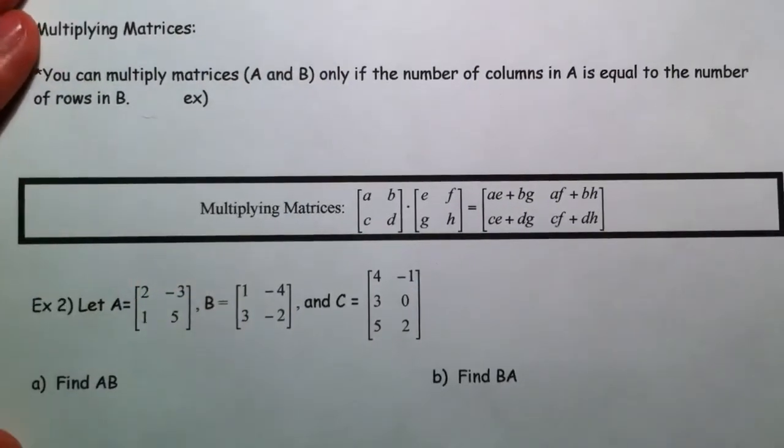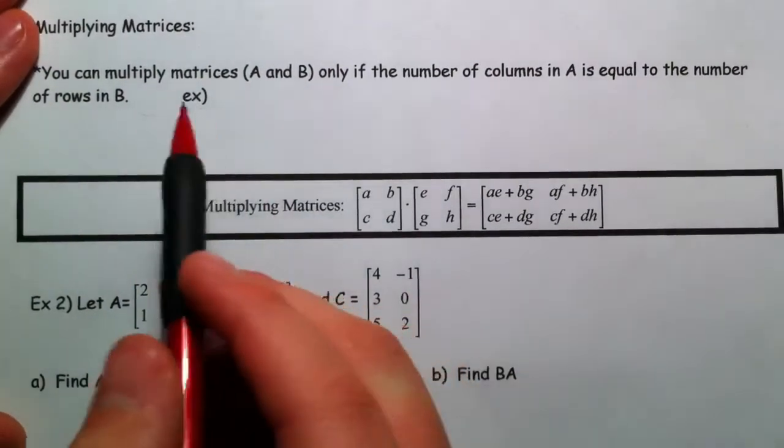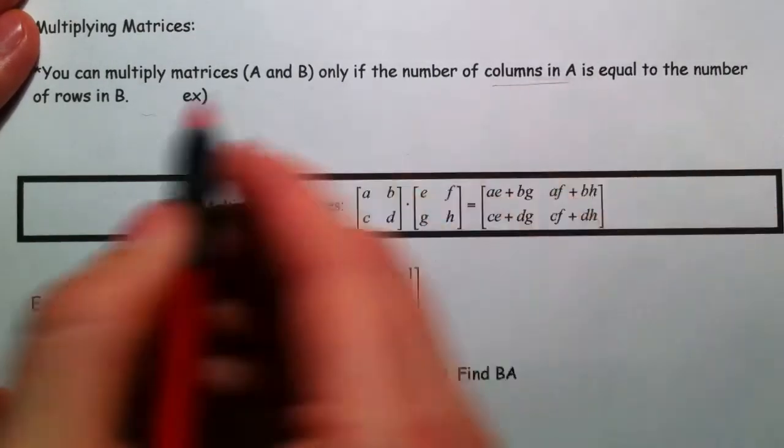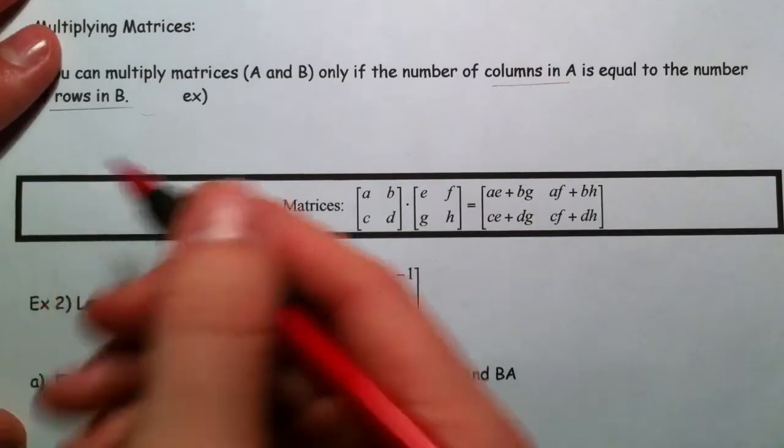Multiplying matrices. Multiplying matrices only if the number of columns in A equals the number of rows in B. So here's what I mean.